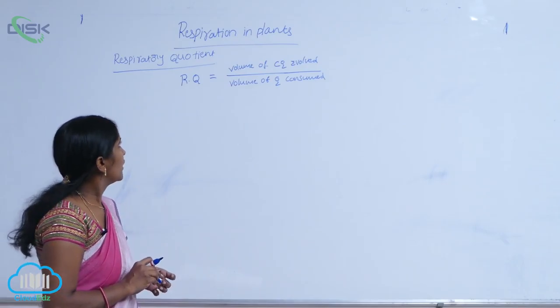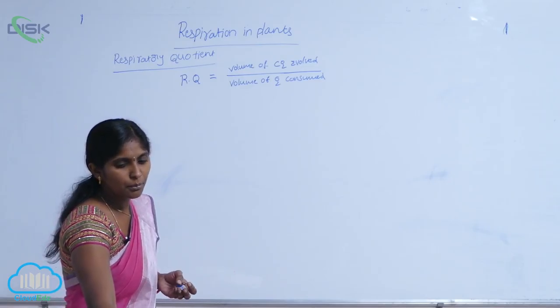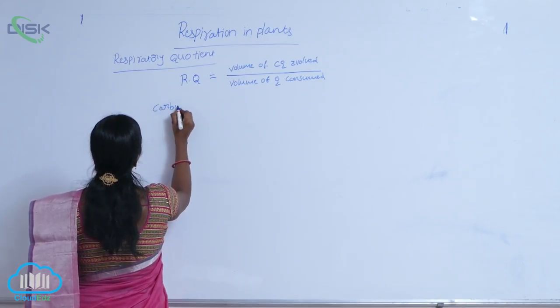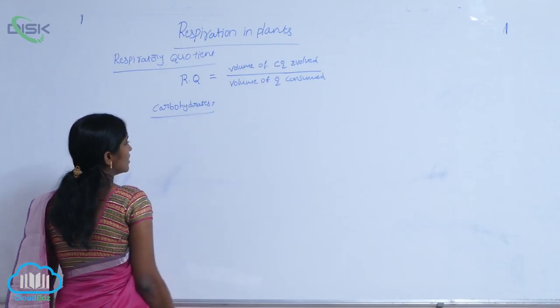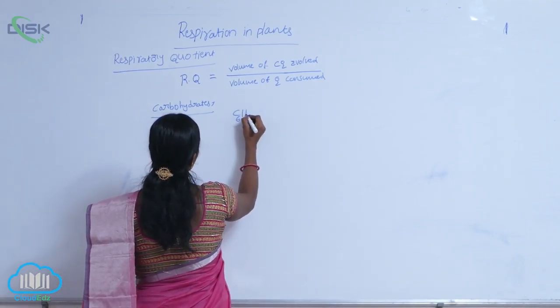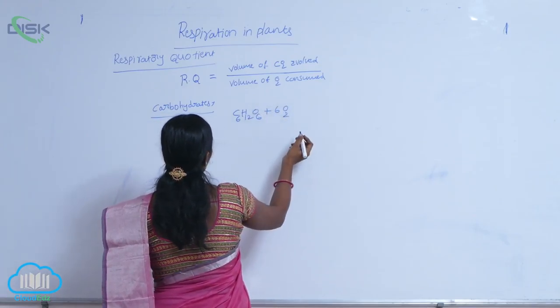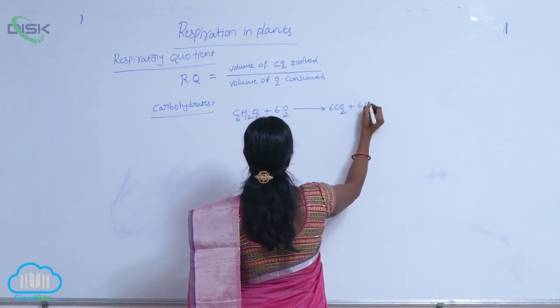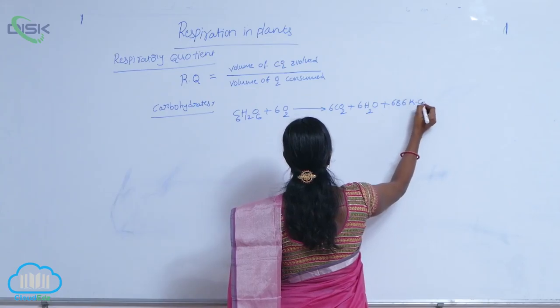For carbohydrates, the RQ value of carbohydrates. Come to the equation of C6H12O6 plus 6O2 gives rise to 6CO2 plus 6H2O plus 686 kilocalories of energy.